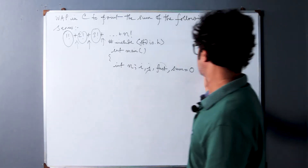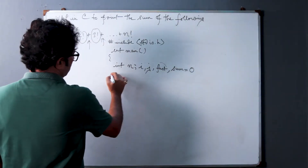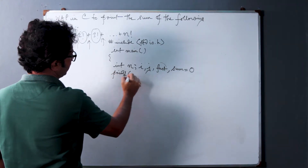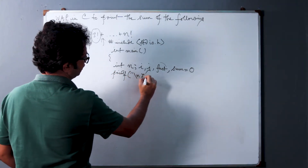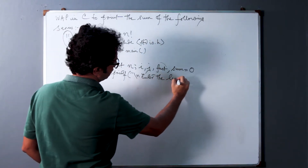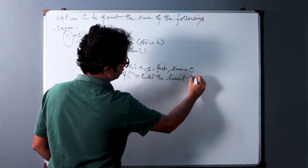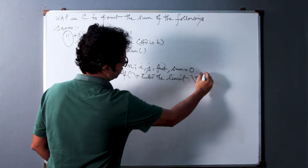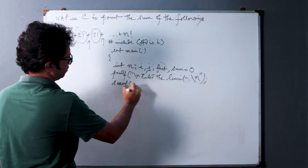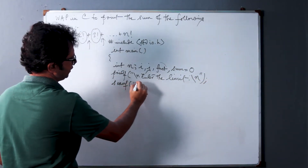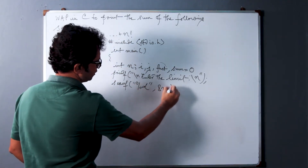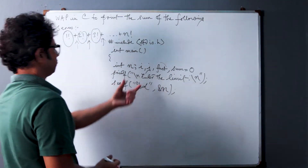Now let us get started with taking input from the user: printf, enter the limit, new line; scanf, %d, ampersand n. So we get the n value.